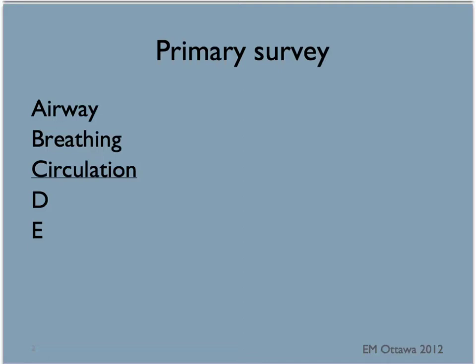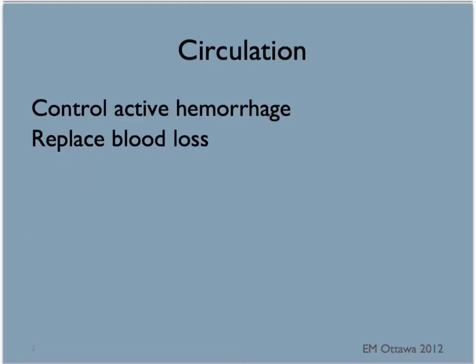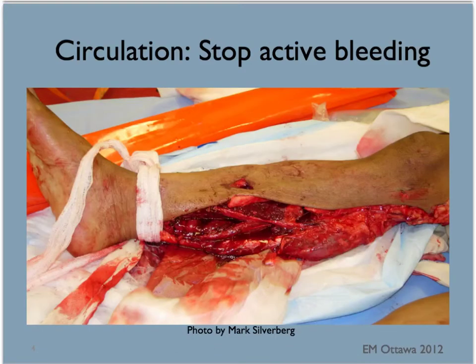Circulation follows airway and breathing assessment. The goal for circulation is to control active hemorrhage by direct pressure and ensure the patient has adequate tissue perfusion by replacing blood loss. Any obvious bleeding is controlled by direct pressure such as surgical clips, staples, or by your own fingertips. Sometimes we even use tourniquets to temporarily slow down the bleeding.